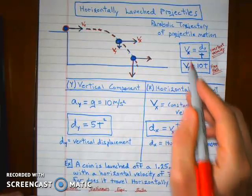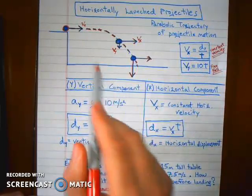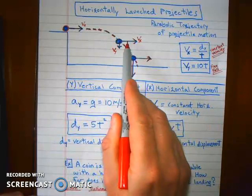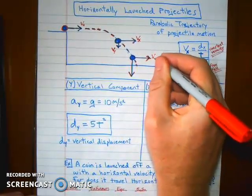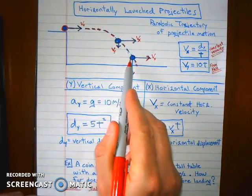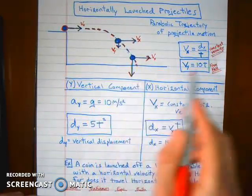So that gives us the two velocity vector equations. And you can see the horizontal velocity vector is always the same length because it's a constant, but the vertical velocity increases as it falls because it's speeding up due to gravity.